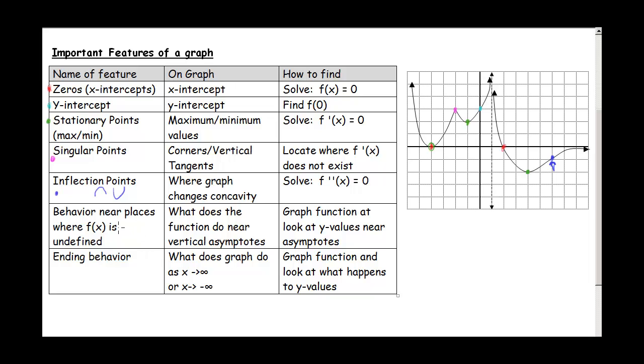Next, one of the things that's important is the behavior near places where f(x) is undefined. If we look at our graph here we have this vertical asymptote here at x equals 1. So we would say as x approaches 1 from the left, our f(x) approaches infinity. As we move towards 1 on this left side, our y values approach infinity because we zoom up to positive infinity here. Then we say the same thing over here as x approaches 1 from the right, we're again going to positive infinity.